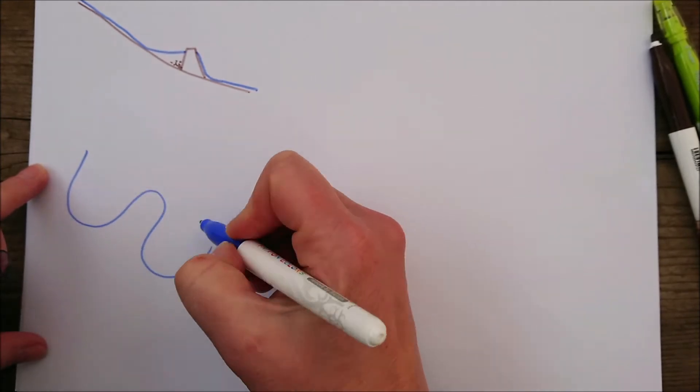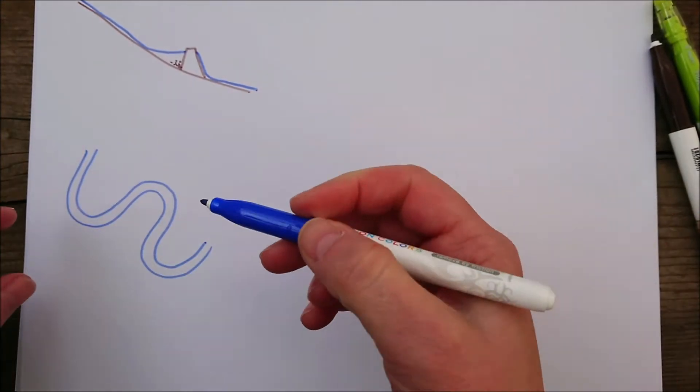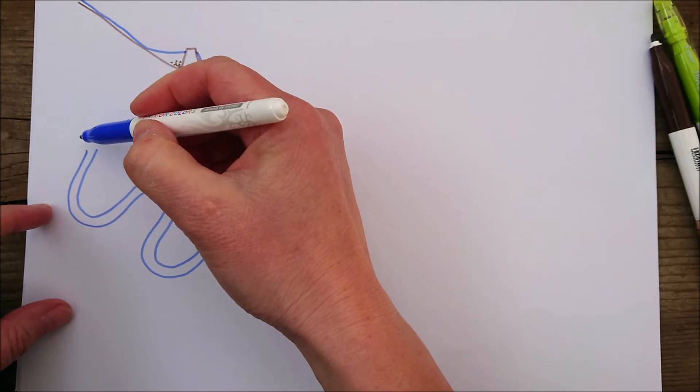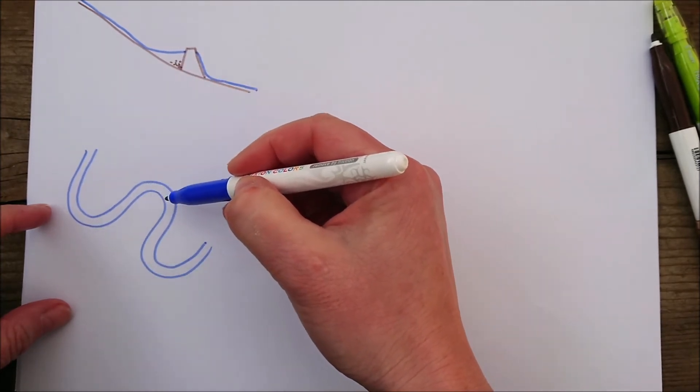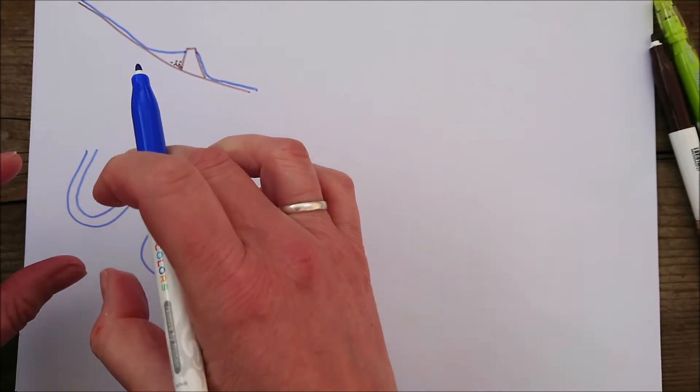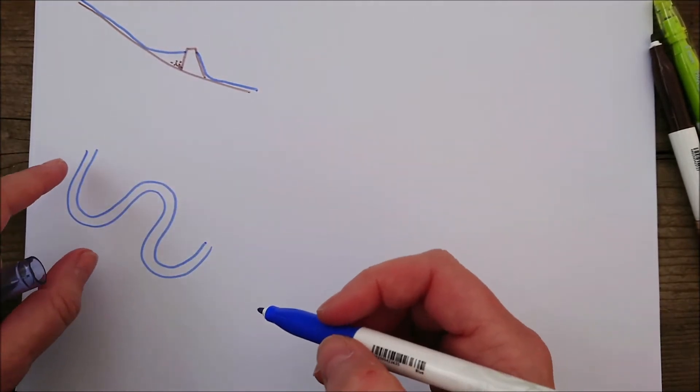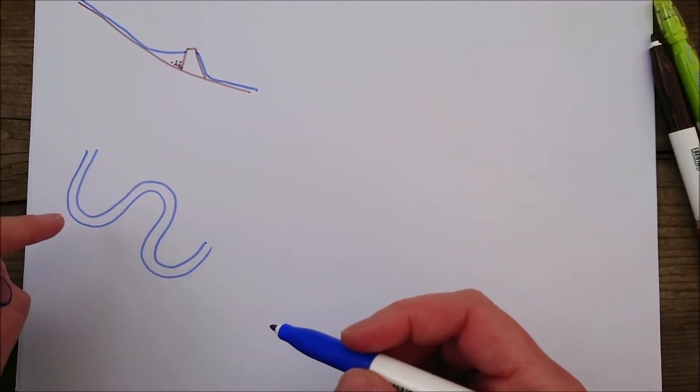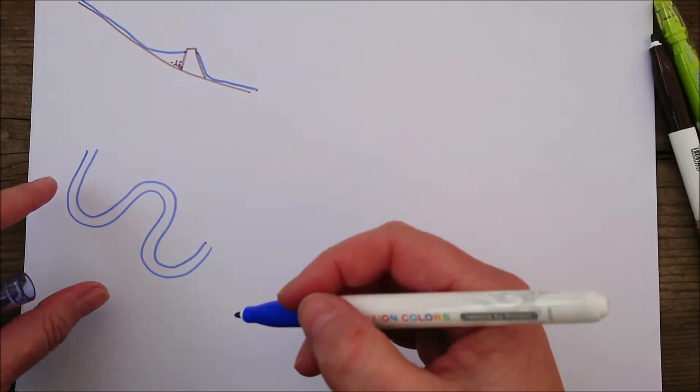The second one is channel straightening. If you've got a very windy river and you've got excessive rainfall, that water is going to take a long time to get down that river. Therefore, it's sitting in that area for longer and is more likely to flood. If you can straighten that river and get rid of those bends, you can move the water on more quickly.